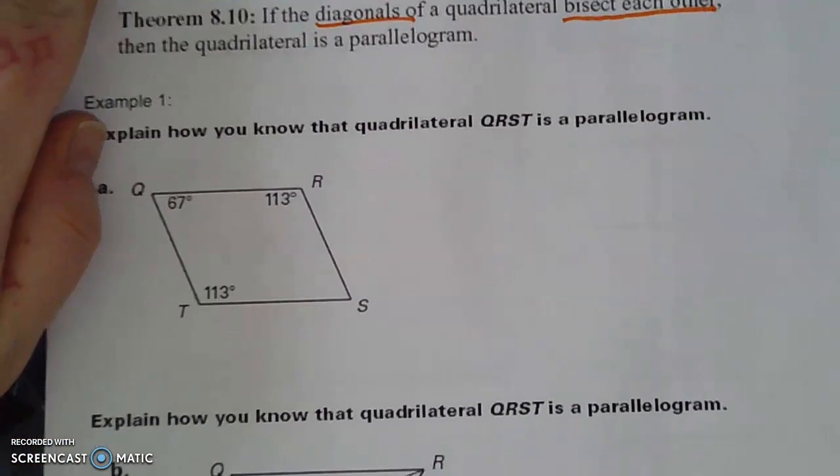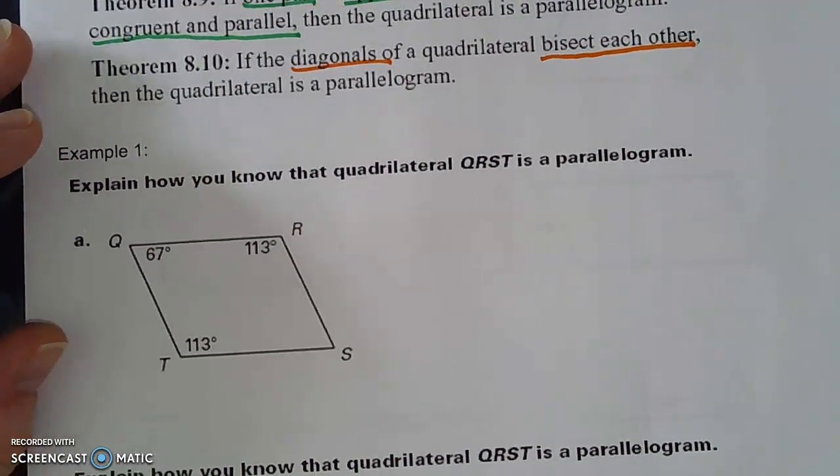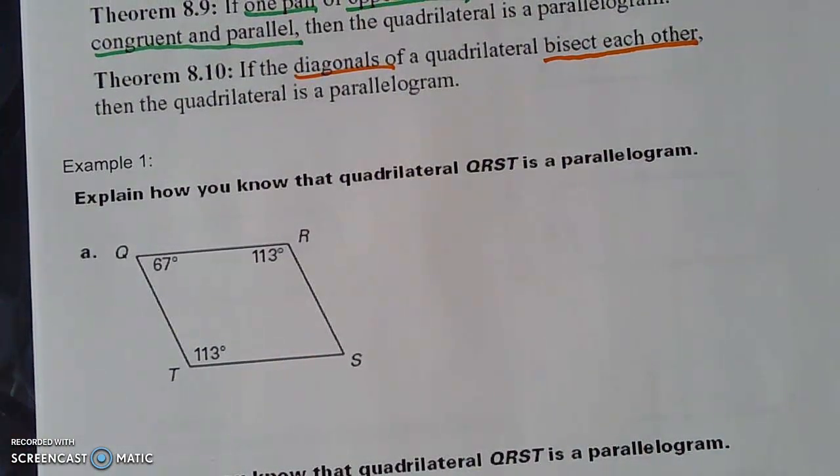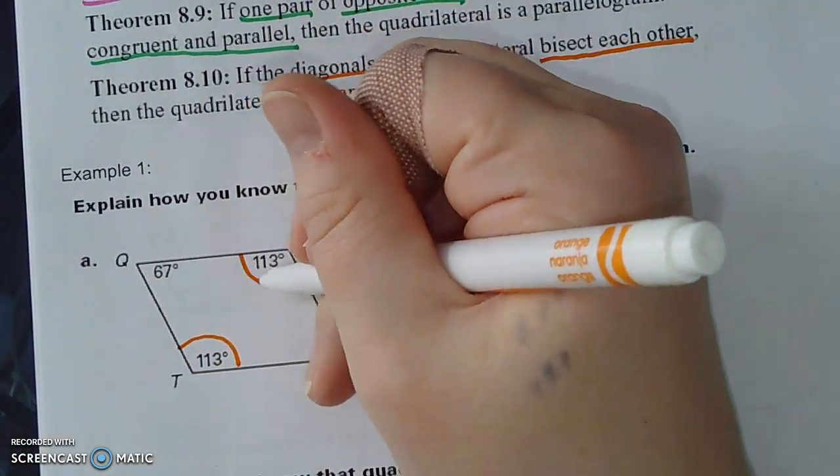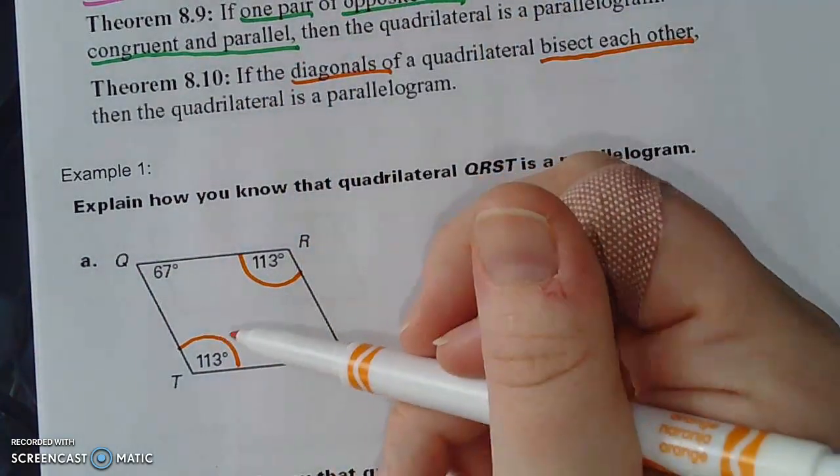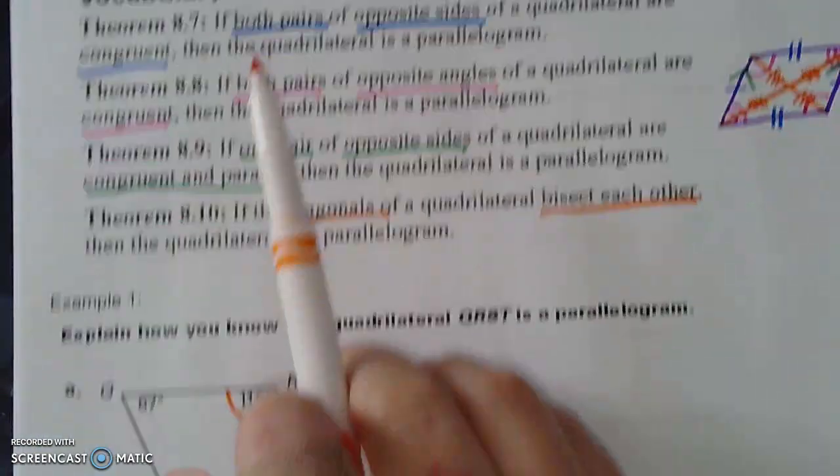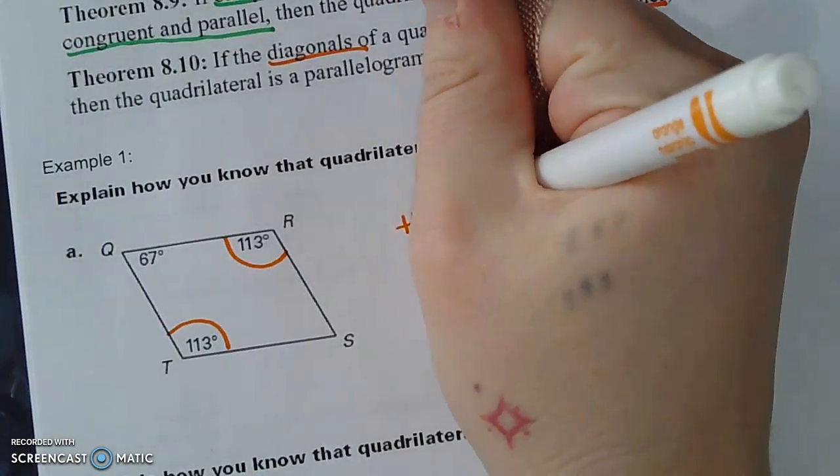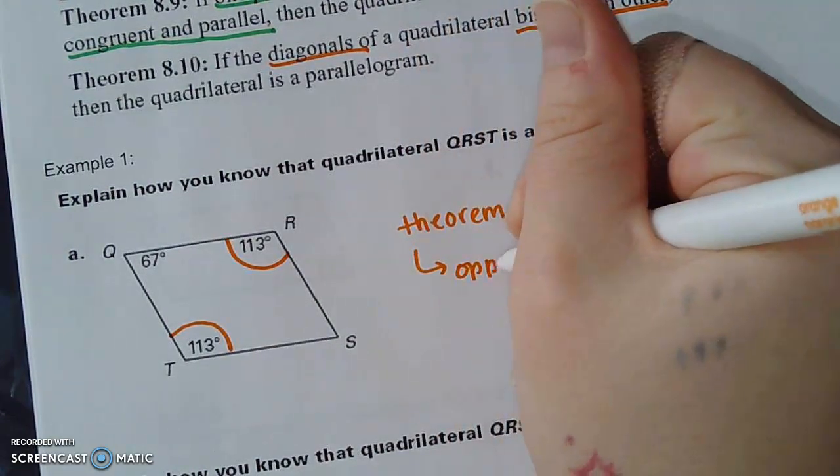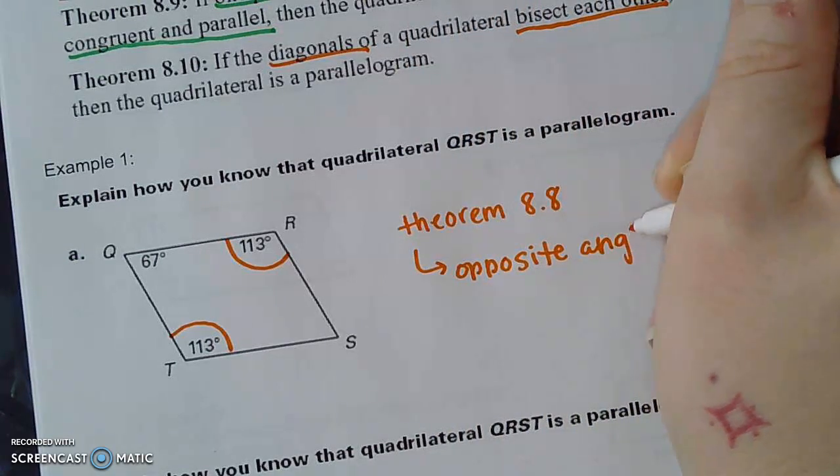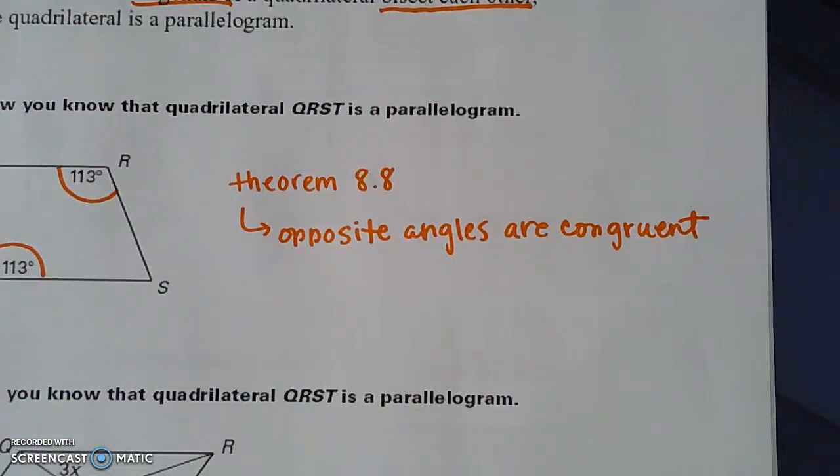So let's get into some examples. It says, explain how you know that quadrilateral QRST is a parallelogram. Immediately, I am seeing that they are giving me some angles. I see angle T and angle R equal the same thing. They are also opposite angles. So I can refer back to theorem 8.8, which tells me that opposite angles are congruent. And that tells me that it's a parallelogram.